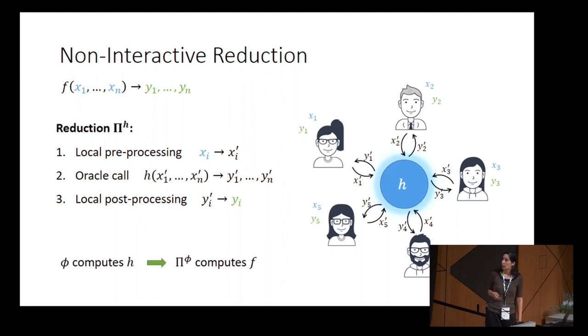Why is this primitive so strong? Because if we have a non-interactive reduction to a function h, then given any way to compute this functionality h, we get a way to compute f in the same number of rounds. It can be either a protocol that computes h, or a trusted party, or even some physical device.